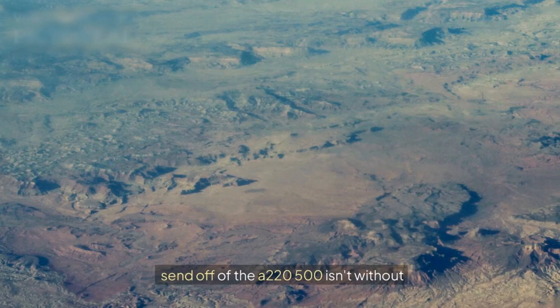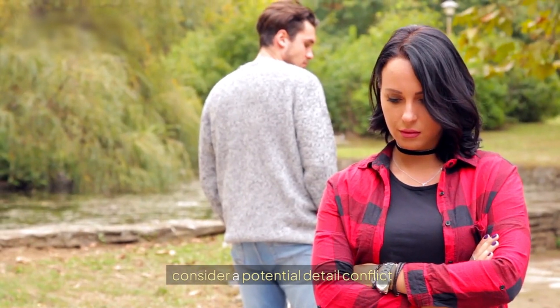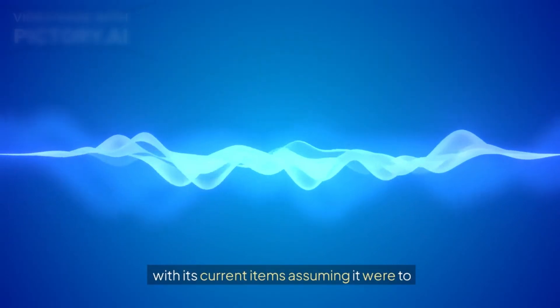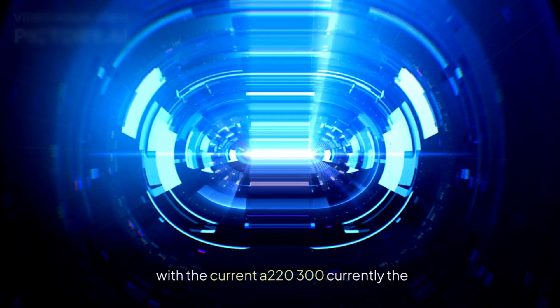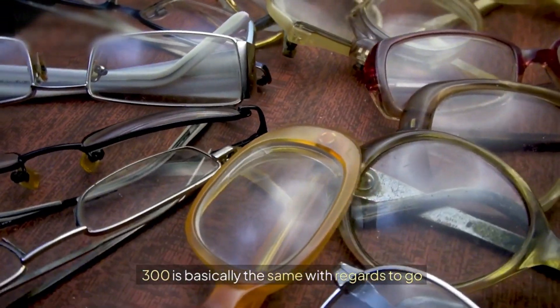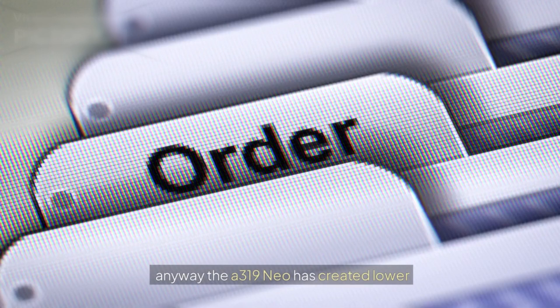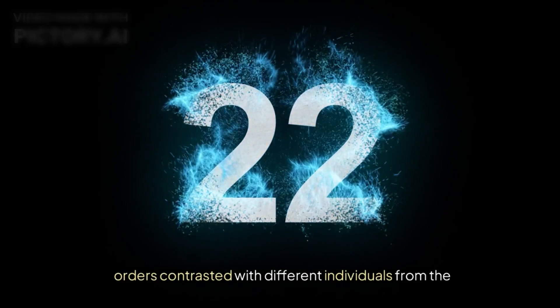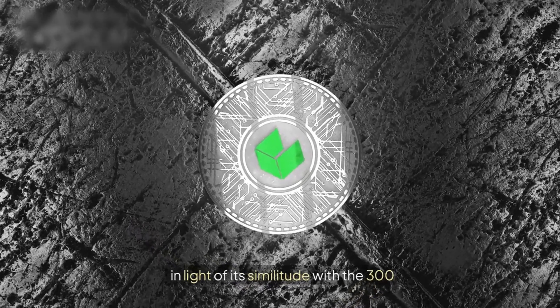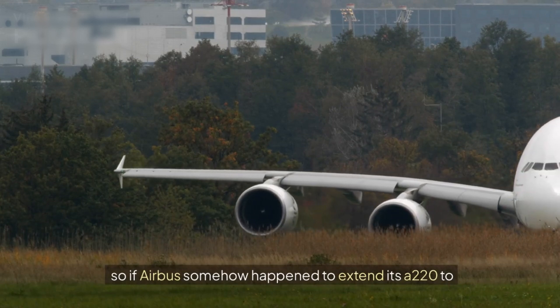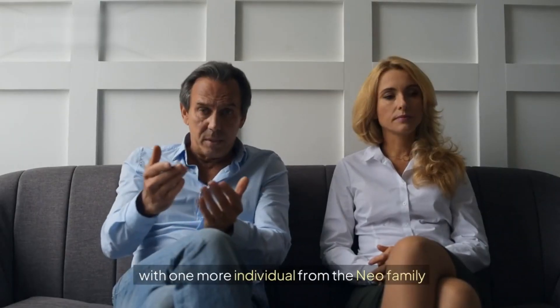Anyway, the send-off of the A220-500 isn't without its difficulties. Airbus would have to consider a potential detail conflict with its current items, assuming it were to stretch the A220 further to not rip apart itself. We have seen this with the current A220-300. Currently the 300 is basically the same with regards to range and ability to Airbus' A319neo. Anyway, the A319neo has created lower orders compared with different individuals from the NEO family, and the primary driver could be light of its similitude with the 300. So if Airbus somehow happened to extend its A220 to the A220-500, a comparable conflict might occur with one more individual from the NEO family.